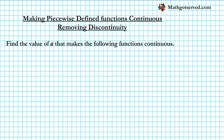Good day, students. On this clip, we're going to be going over two examples on making piecewise defined functions continuous, or basically removing the discontinuity in a piecewise defined function. The instruction is to find the value of A that makes the following functions continuous. We're going to take a look at two examples.